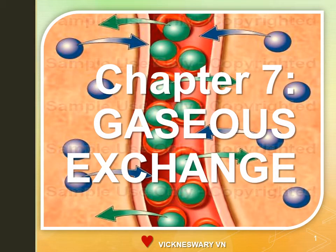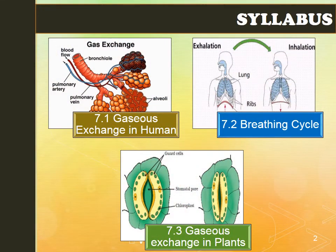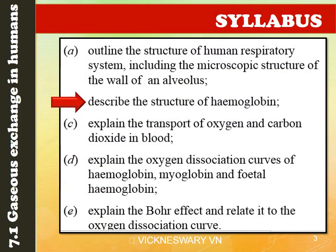Hello everyone, today we continue Chapter 7, Gaseous Exchange, still in syllabus 7.1, Gaseous Exchange in Humans. We move on to Part B. Previously, we discussed Part A, in which we learned to outline the structure of the human respiratory system as well as the microscopic structure of the alveolar wall.